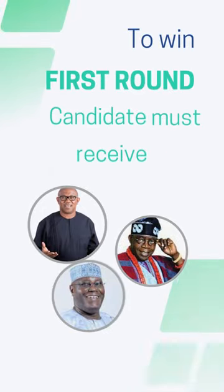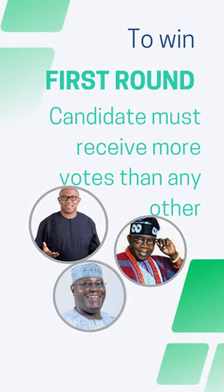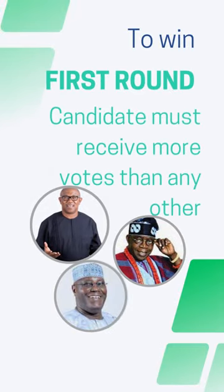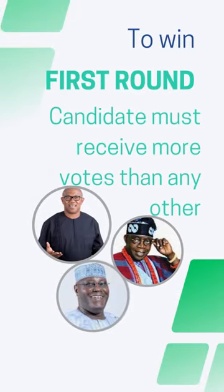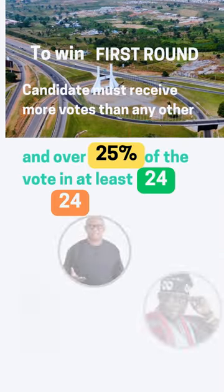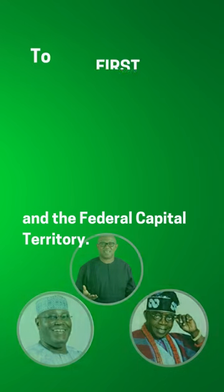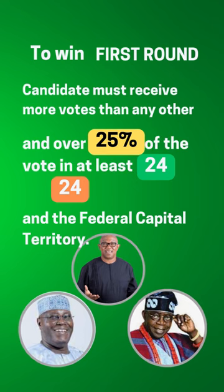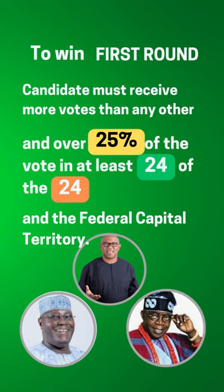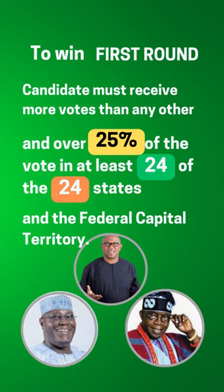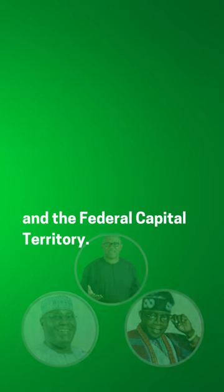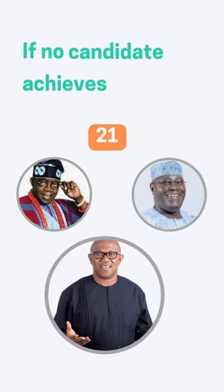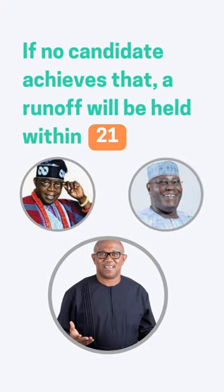To be elected in the first round, a candidate must receive a plurality of the vote and over 25% of the vote in at least 24 of the 36 states and the federal capital territory. If no candidate achieves that, a run-off will be held within 21 days.